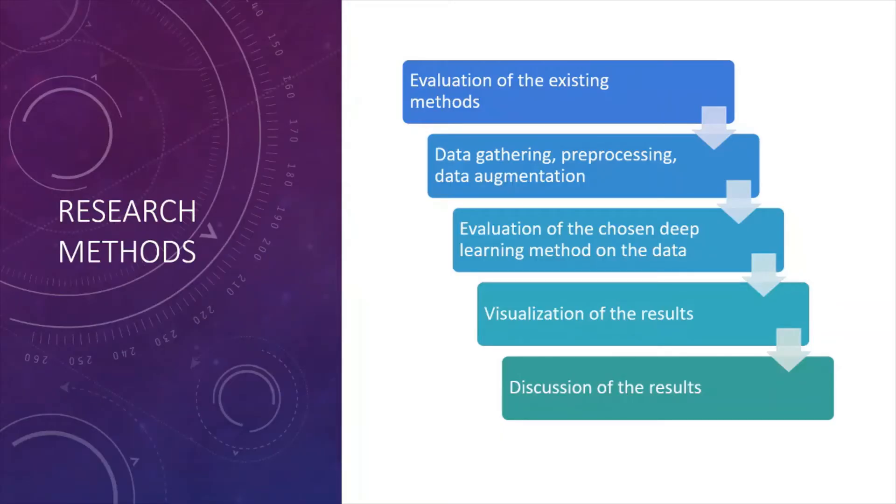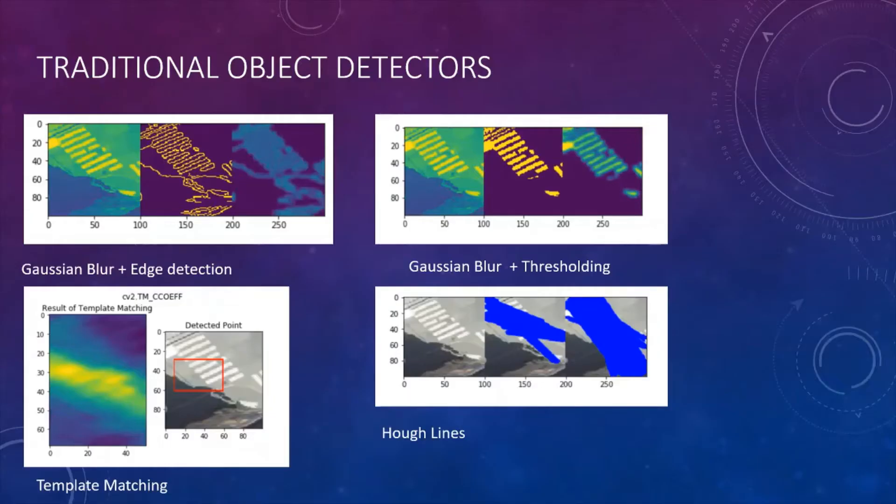Research method. Here you can see the overall flow of the conducted research. First we will start with the traditional object detectors. Traditional object detection was mainly based on image processing techniques. We tried to make some experiments with our data. In particular, we applied Gaussian blur plus edge detection, thresholding. We tried to find Hough lines and to do template matching. In general, if we take only one picture and try to apply all these techniques, we will get pretty good results.